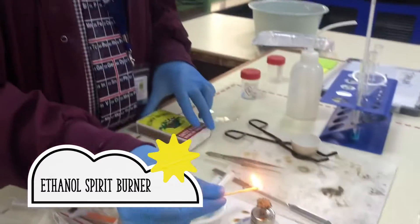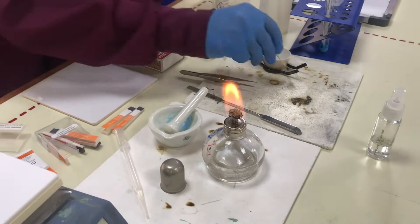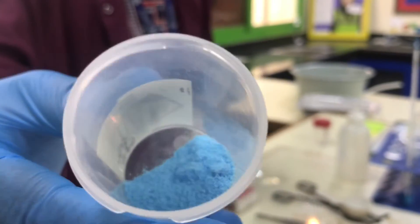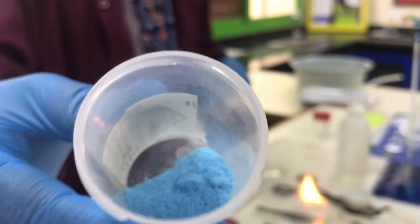We're going to utilize the help of a spirit burner. This is a spirit burner, it's just burning some ethanol. I've got some copper 2 sulfate. This is hydrated copper 2 sulfate, you can see that it's blue.